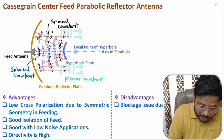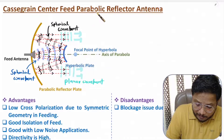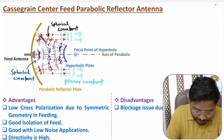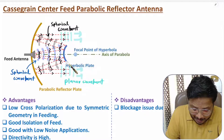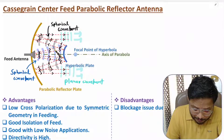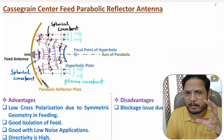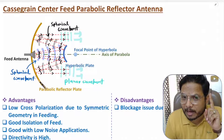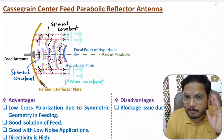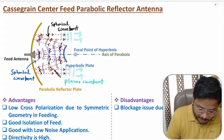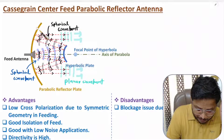To summarize the Cassegrain center feed operation: the secondary hyperbolic reflector plate reflects EM waves from the feed and converts spherical wavefronts to spherical wavefronts, because the hyperbolic reflector only maintains spherical wavefronts — only a parabolic shape can convert spherical wavefronts into planar wavefronts. After this second reflection, the primary parabolic reflector plate converts the spherical wavefront into a planar wavefront.